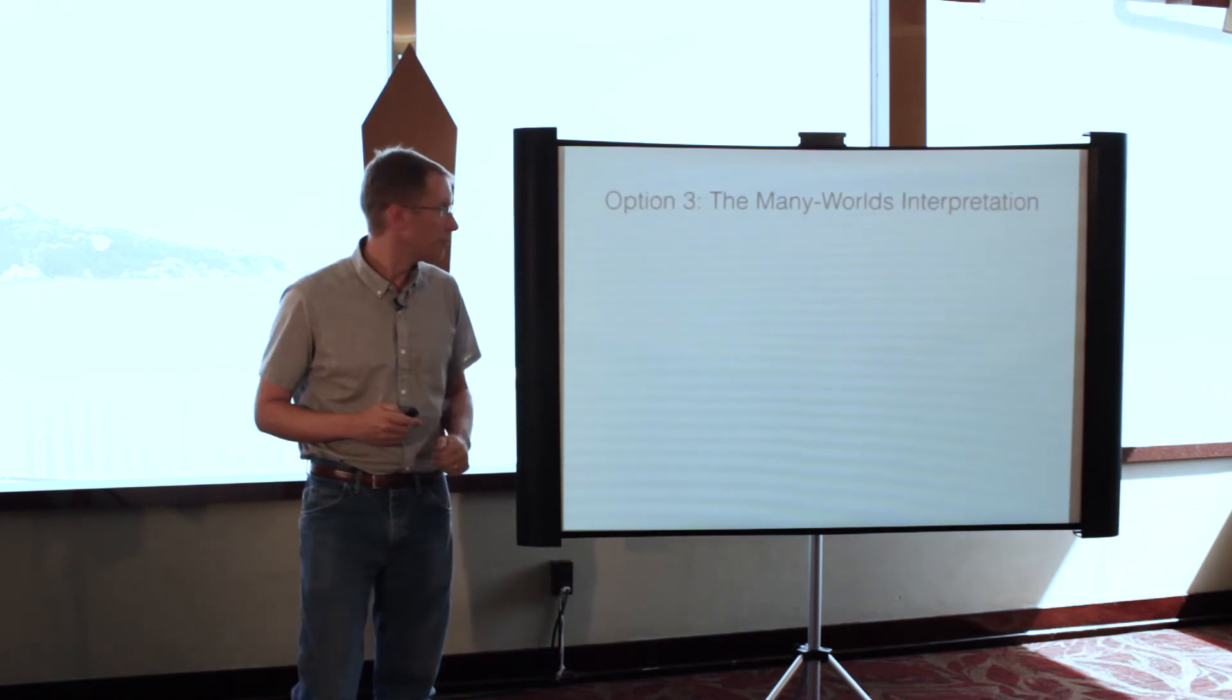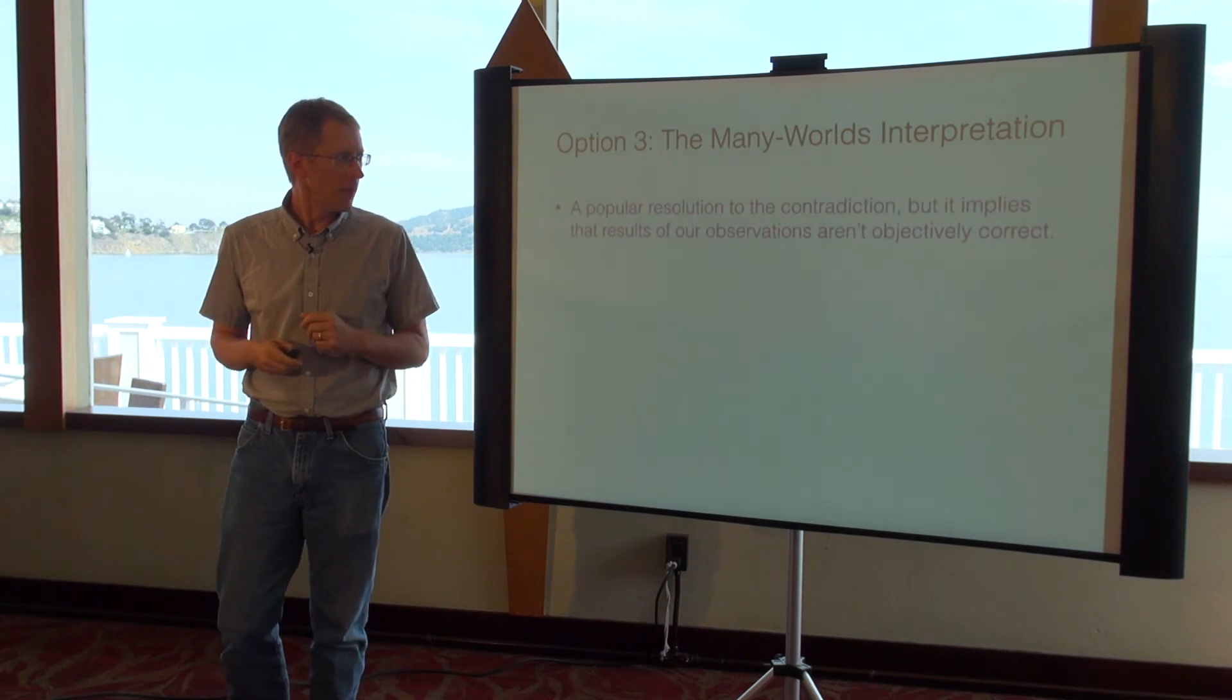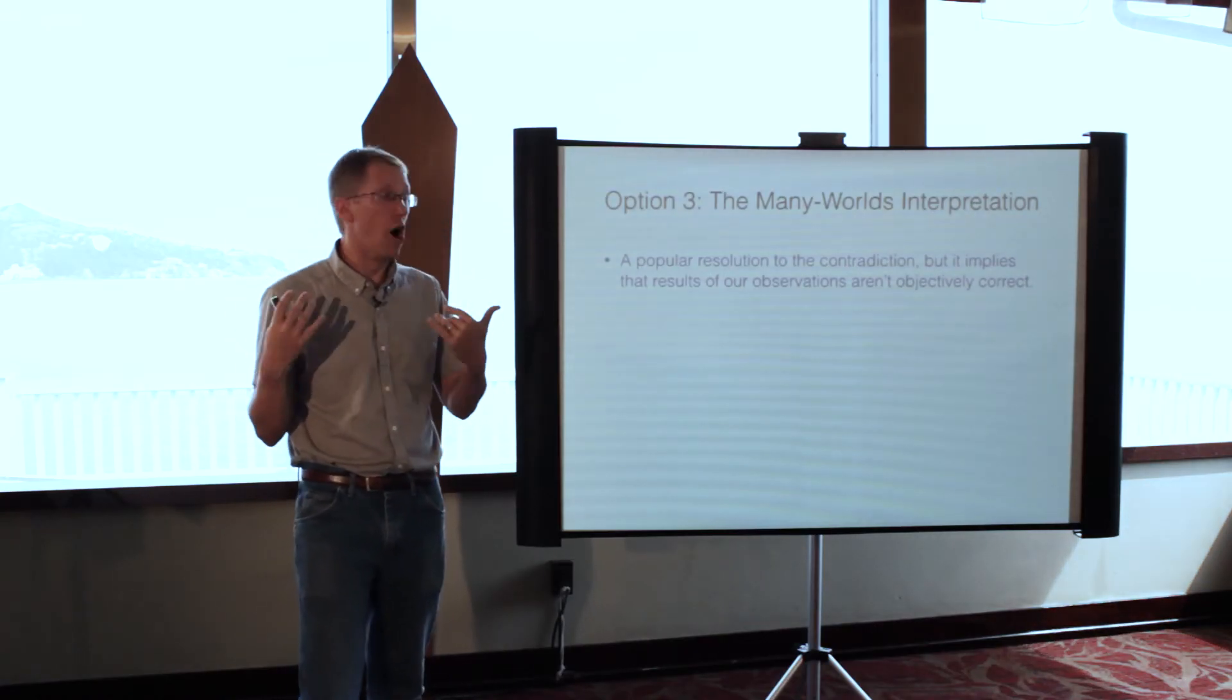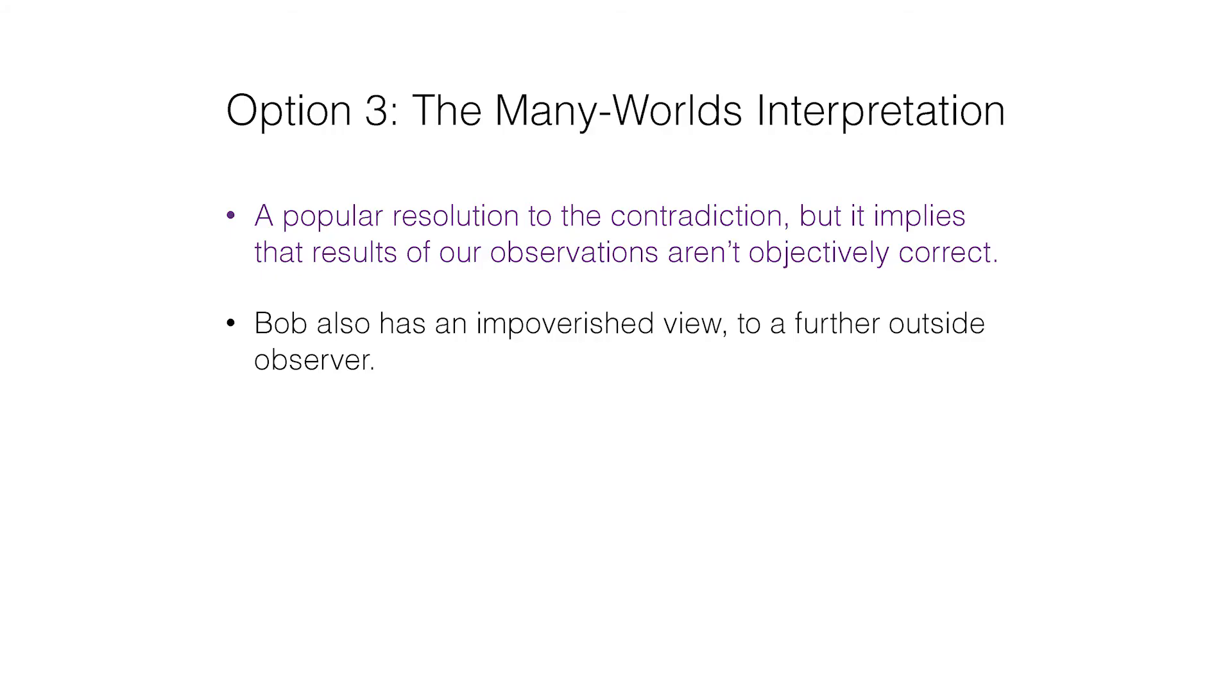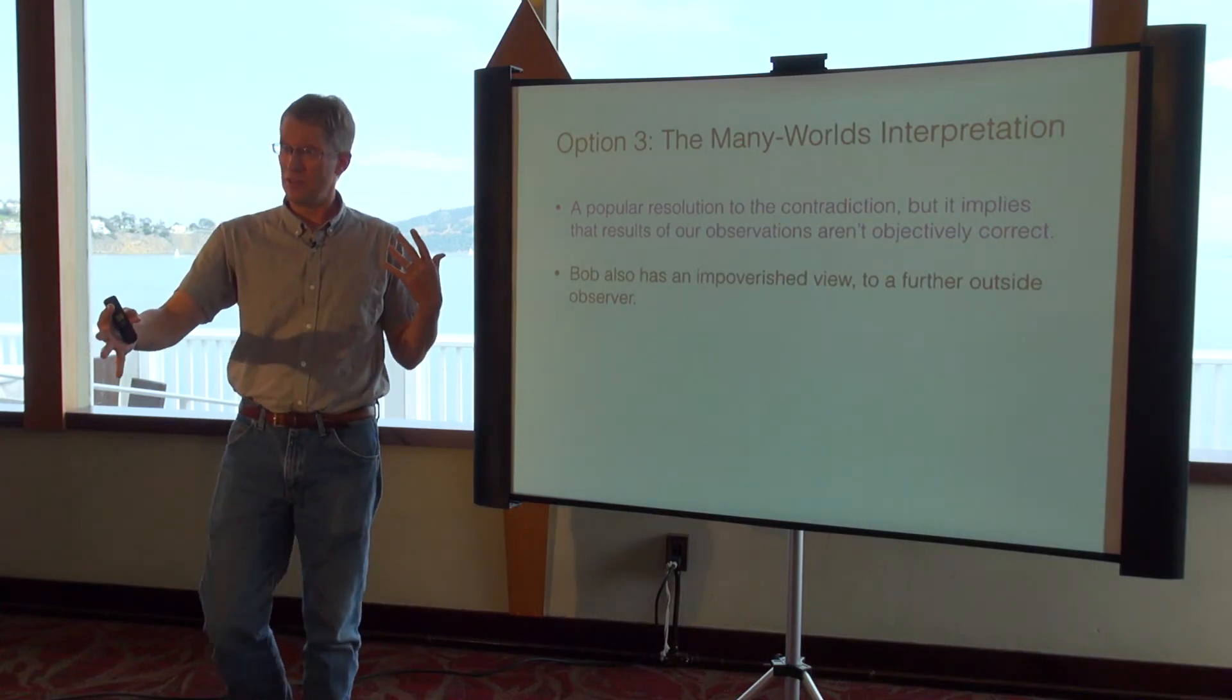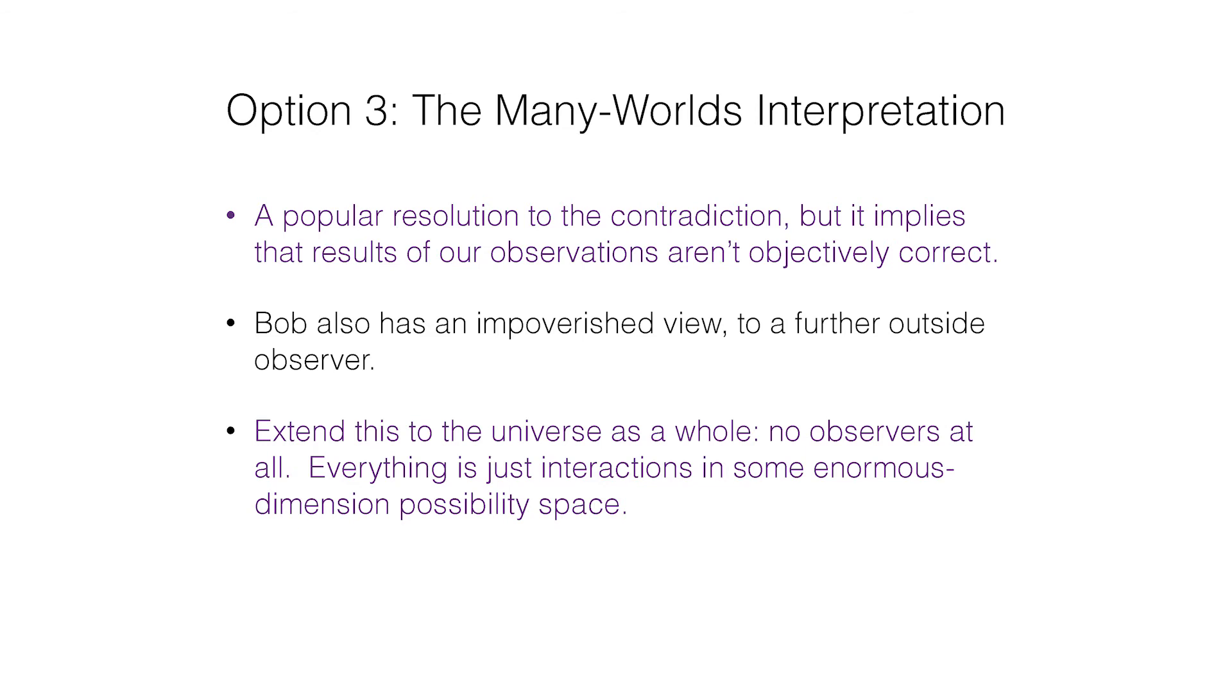Option three often falls under the category of the many worlds interpretation. It's a very popular resolution because it gets rid of the contradiction by saying that Bob on the outside is right and Alice is wrong. She's not objectively correct about what she sees. She's seeing only a very small impoverished piece of the story. Of course this implies that Bob is also impoverished to a further outside observer. If there's another observer Charlie outside of Bob, then Charlie has the better view and Bob is the impoverished one. This goes on and on until you get to the whole universe where there are no observers.